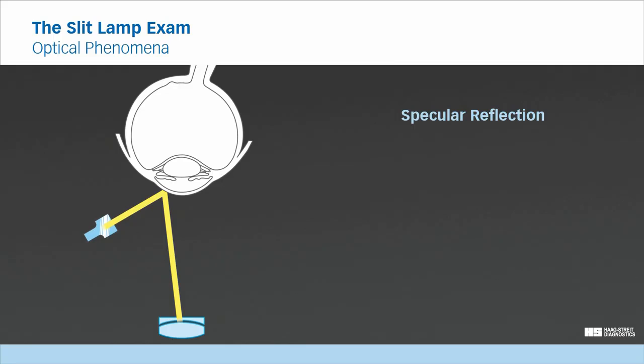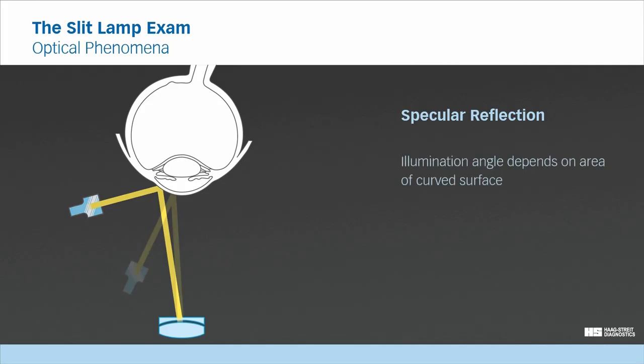When choosing the observation angle, you have to keep in mind that according to the law of reflection, the angle of the incident light equals the reflected light. Peripheral areas of the cornea require an increased illumination angle, while more central locations require a decreased illumination angle.